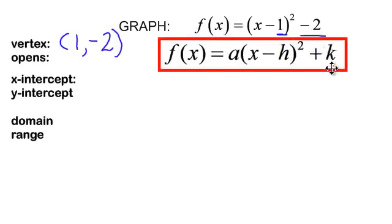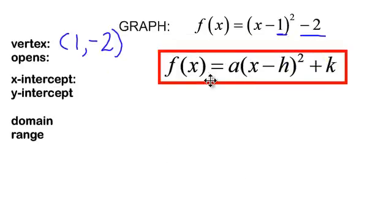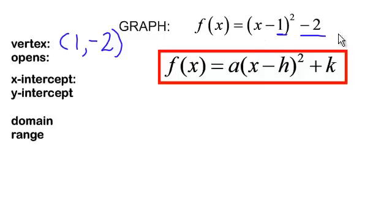I know this is the vertex from the formula f of x is equal to a times x minus h squared plus k, where the vertex is h, k. I do need to be careful because in the formula it's x minus h, so that is why a lot of times people get confused with the h inside the parentheses — it may be opposite of what you think it should be.